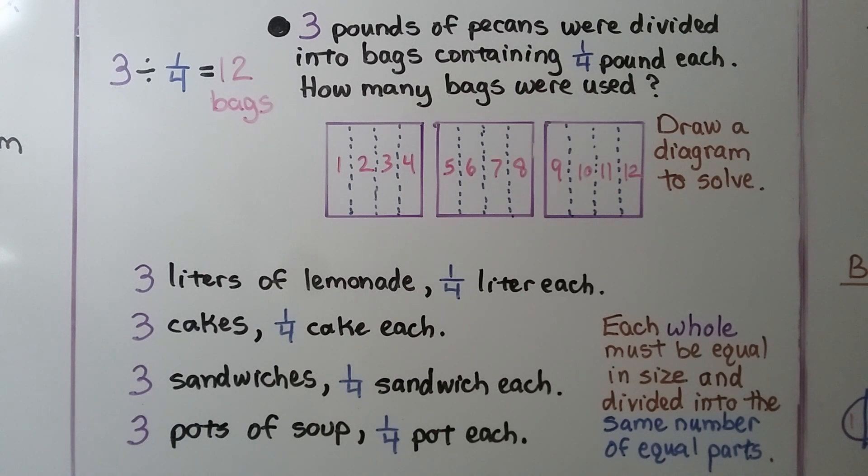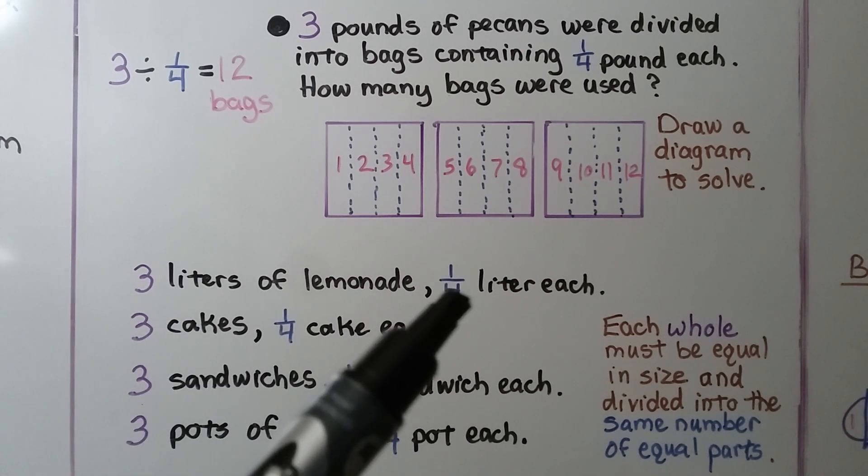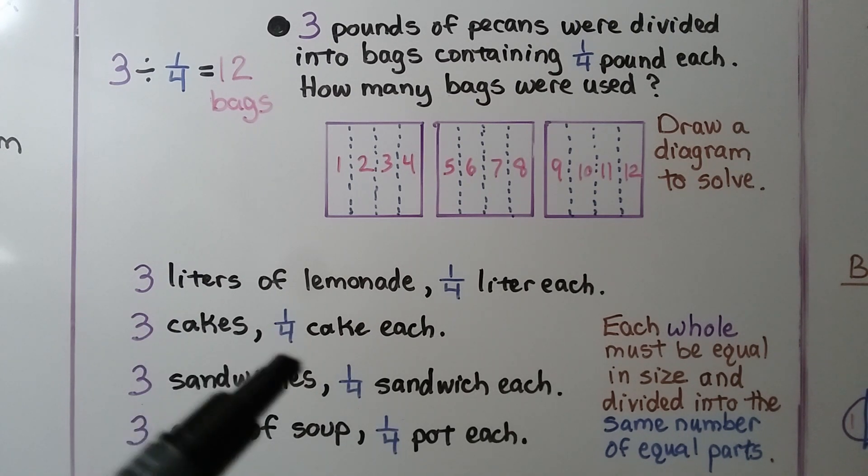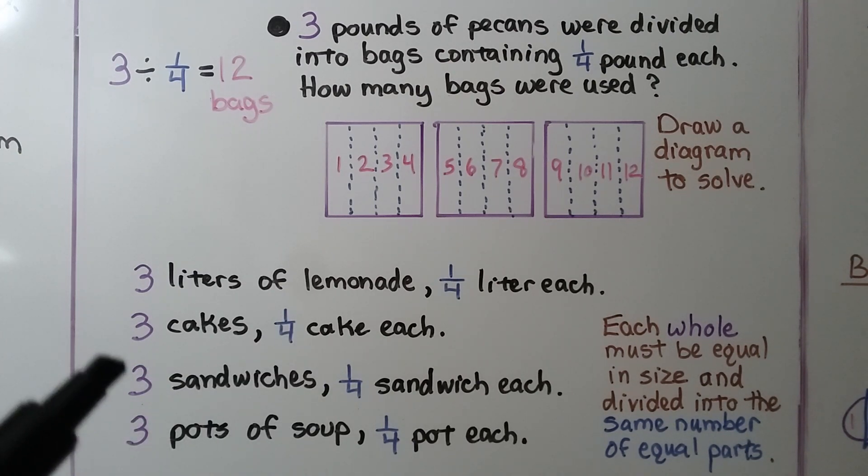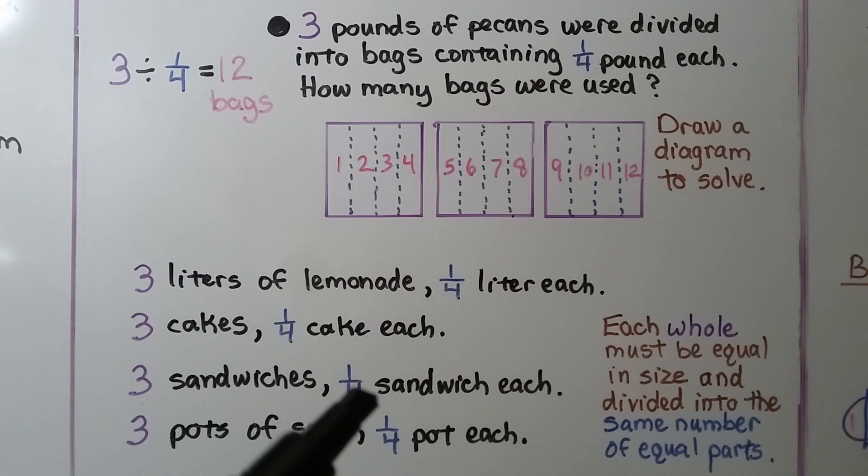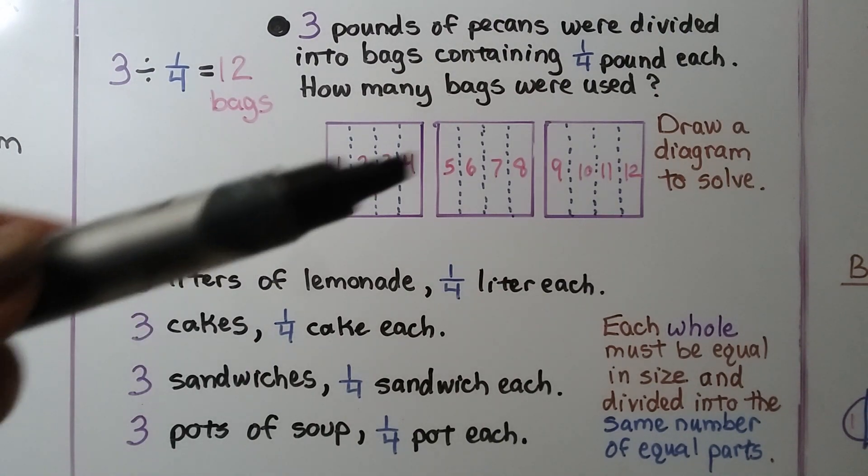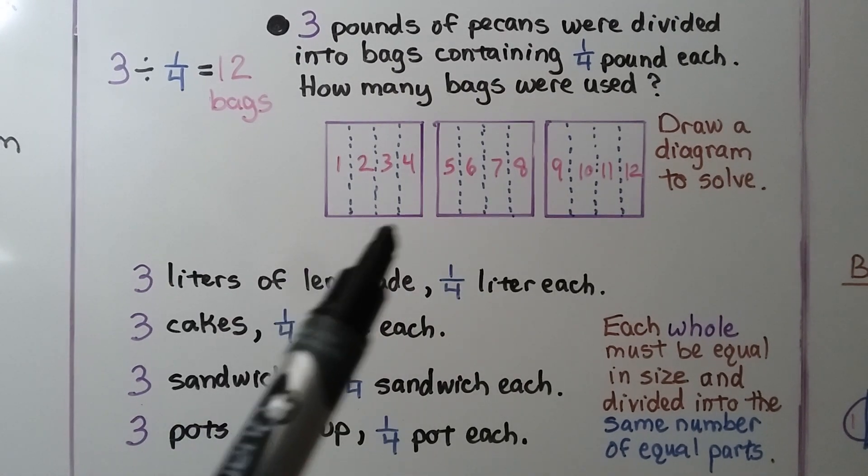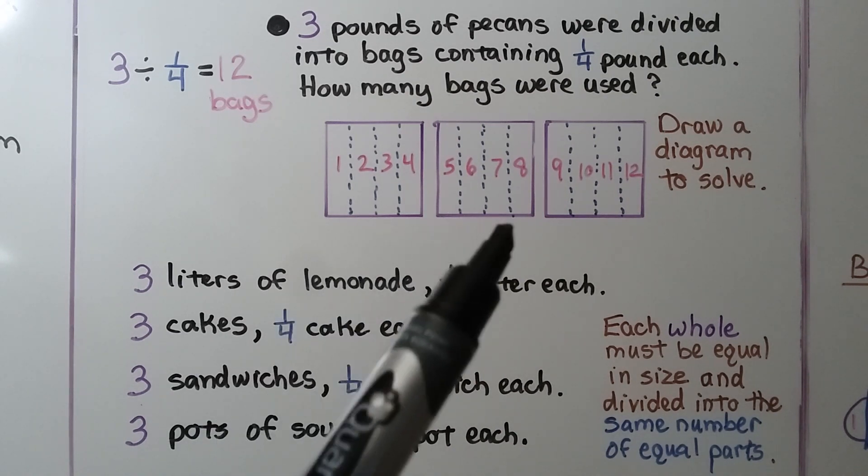We could also use 3 liters of lemonade in containers of 1 fourth liter each, or 3 cakes with people getting 1 fourth cake each, 3 sandwiches split into 1 fourth sandwich each, or even 3 pots of soup with people getting 1 fourth pot each. So each whole must be equal in size. And divided into the same number of equal parts. Each of these 3 wholes are split into 4 parts.